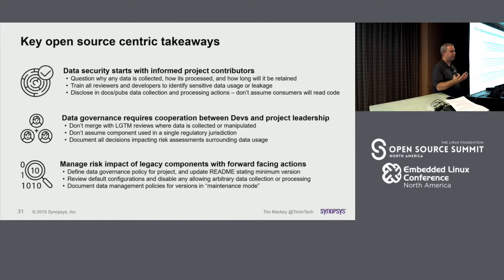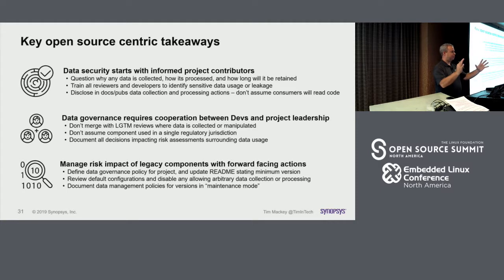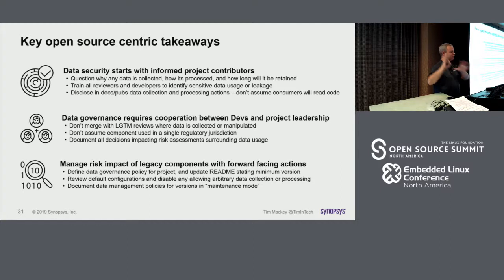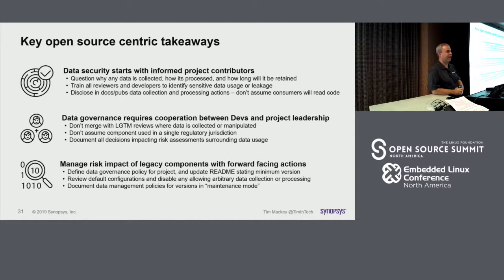When you decide you're done with a project, update the readme at minimum to say: this is the last version, if you fork this it's on you, I am done. At that point you don't have a whole bunch of issues where people are asking why you haven't processed their pull request. And that's it for my talk — I've got a whole bunch of references for those lovely regulations. I thank everyone, and I think we have about two minutes for questions.